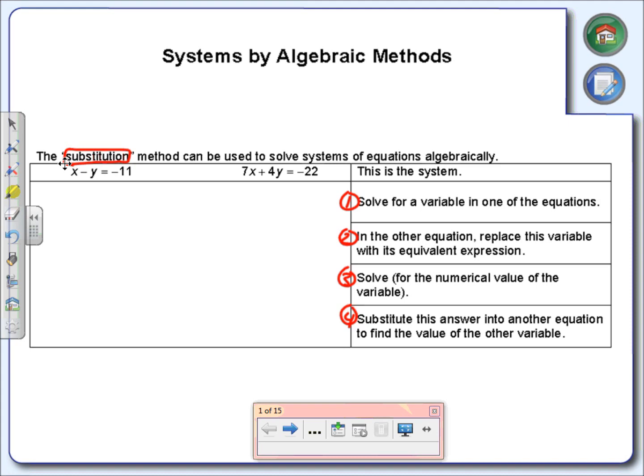The first thing they want us to do is solve for a variable in one of the equations. They didn't say solve for x or y, it's our choice. I'm going to take this first equation and solve it for x. The reason I chose to solve for x is because all I have to do is move my y over. So now I have x is equal to negative 11 plus y. That takes care of my first step.